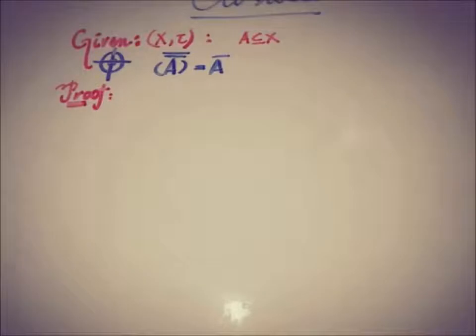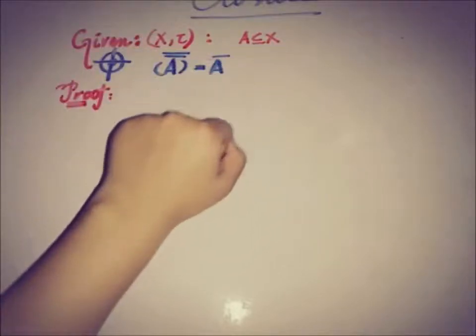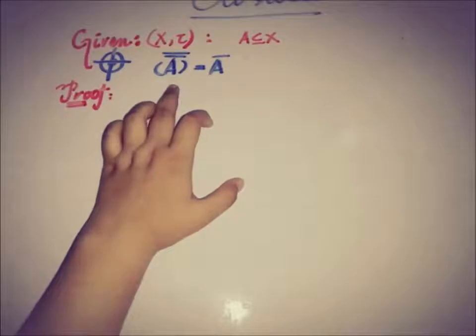Hello everyone, this is Dear from eAcademy. Today we'll talk about a theorem of the closure of a set in a topological space. That is, if X is a topological space and A is a subset of X, then the closure of A closed set is equal to the closure of a set or a closed set.